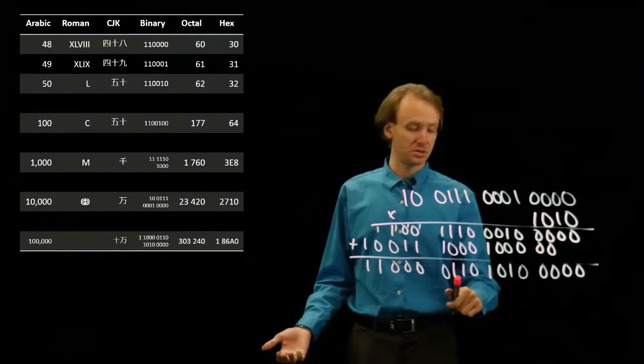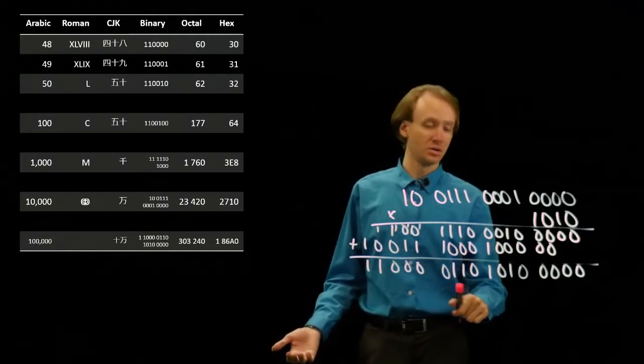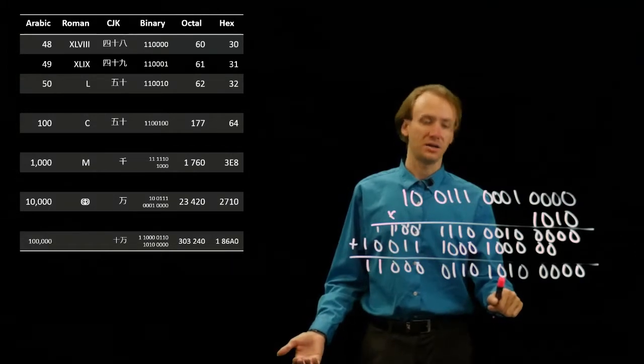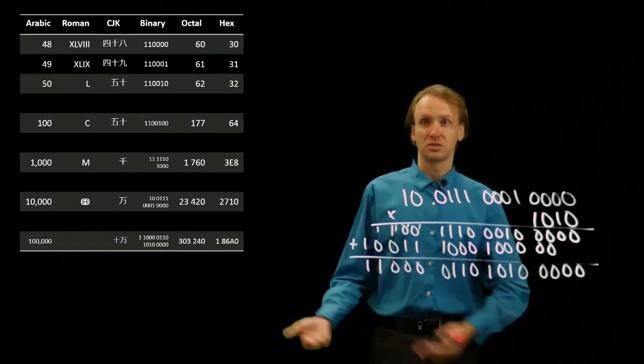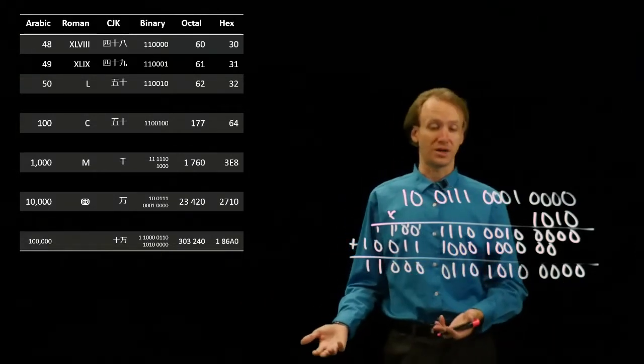So I get 1, 1000, 0, 1, 1, 0, 10, 10, and 0. So that's what I see over there for 100,000 as well.